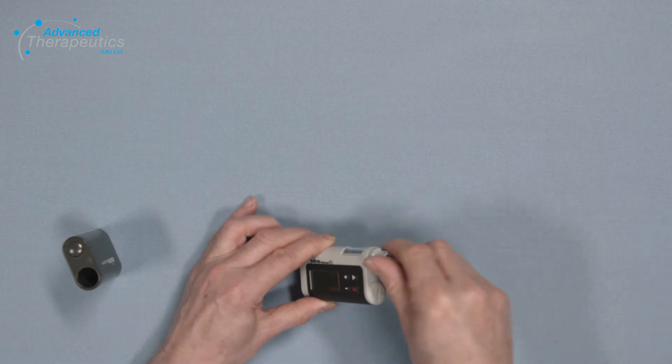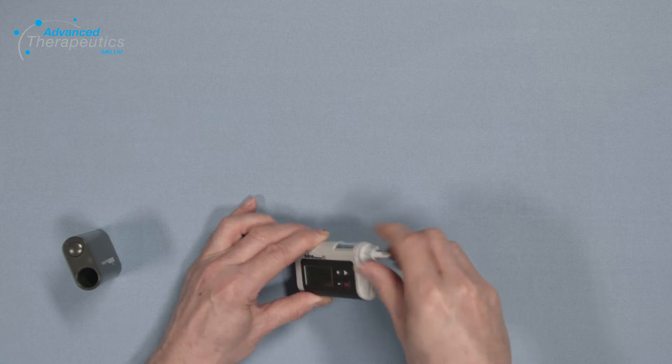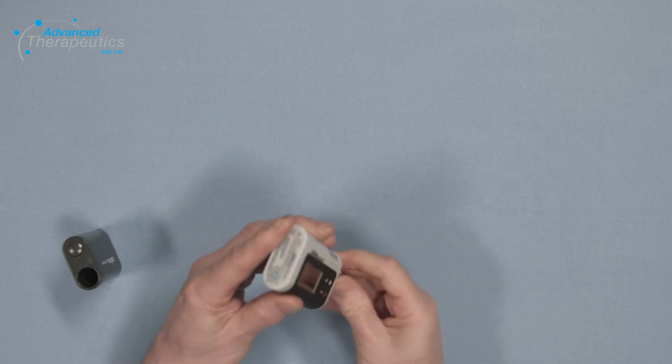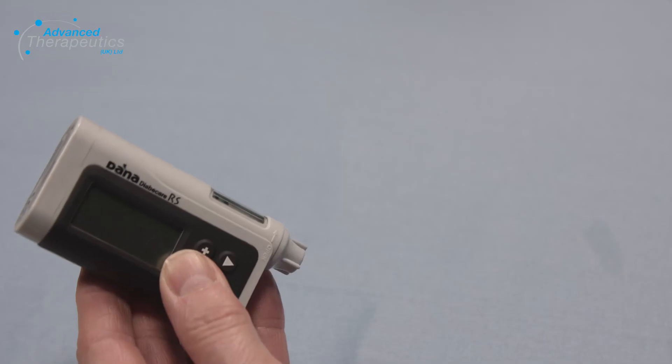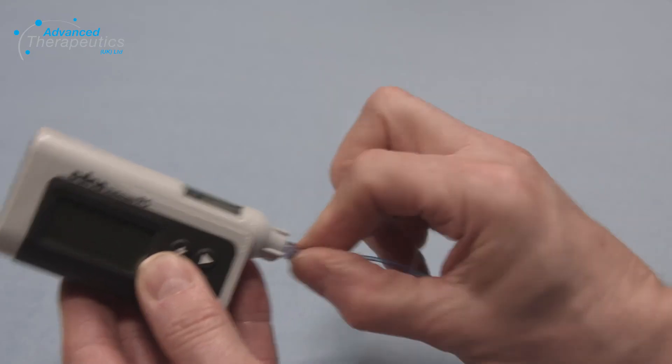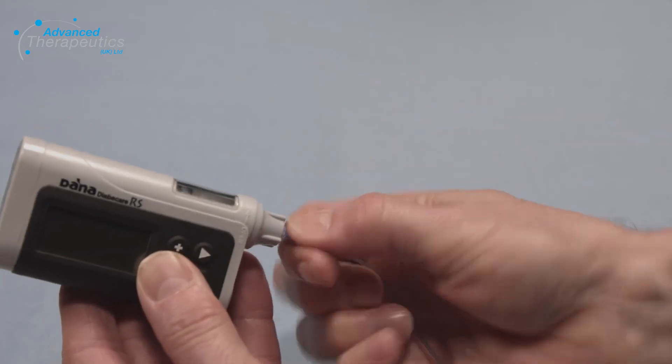Screw on the adapter, remember it's counterclockwise and not too tight. Never use the key to tighten the adapter. Point the pump downwards and then remove the white cap. Attach the new tubing screwing counterclockwise, firm but not tight.